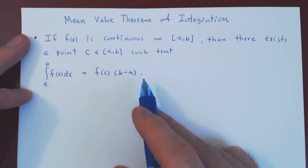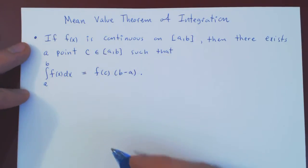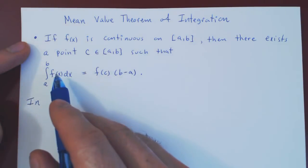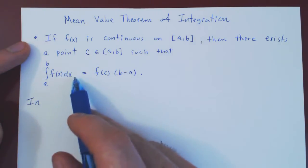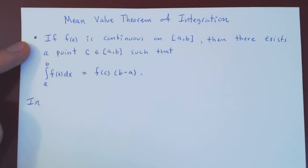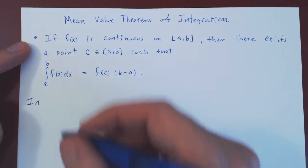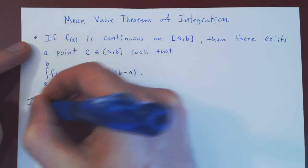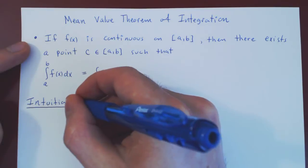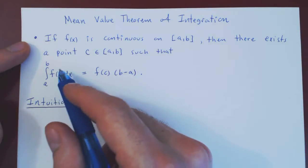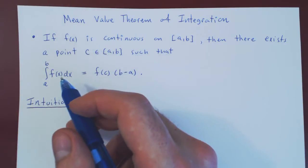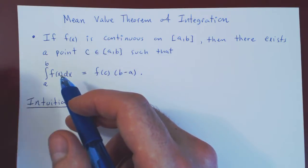Why should this result be fairly intuitive? It will be so once we ask ourselves what is the geometric interpretation of both sides of the equality, and once we answer this question, the equality will become apparent. Just for argument's sake, we'll assume that f of x is positive, but even if parts of f on [a, b] were negative, the argument is the same.